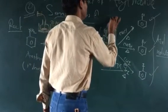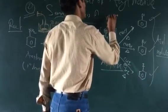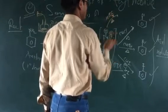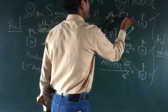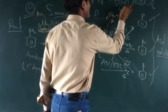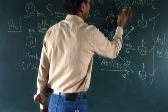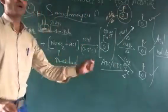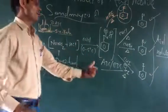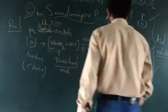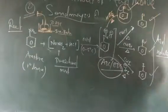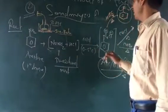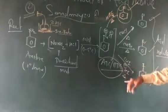If instead we add HBF4 to the diazonium salt (ADC or BDC), we get fluorobenzene as the product. So, fluorobenzene is formed from aniline via the diazonium intermediate when treated with HBF4.